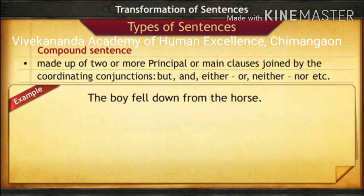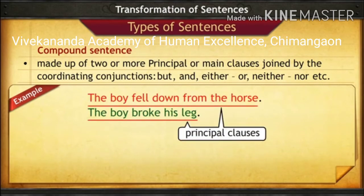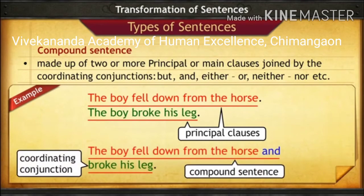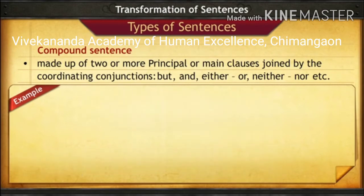For example, take the two sentences: 'The boy fell down from the horse' and 'The boy broke his leg.' Each is a principal clause. In a compound sentence, we join these two principal clauses with a coordinating conjunction: 'The boy fell down from the horse and broke his leg.' Here, 'and' is used to join the two clauses.